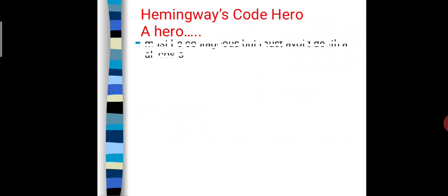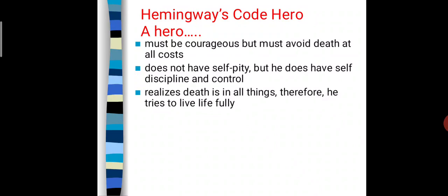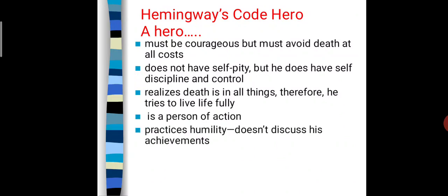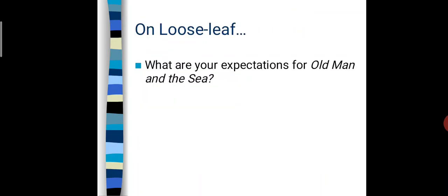Hemingway's code hero: a hero must be courageous but must avoid death at all costs. The code hero does not have self-pity but does have self-discipline and control. He realizes death is in all things, therefore he tries to live life fully. The code hero is a person of action, practices humility, does not discuss his achievements, and faces his greatest trial alone, testing himself to his limit.